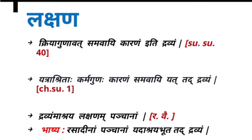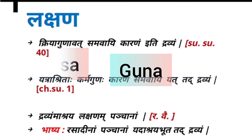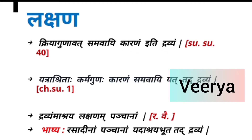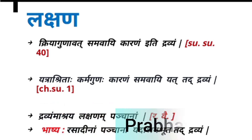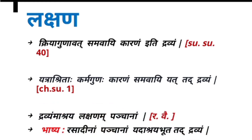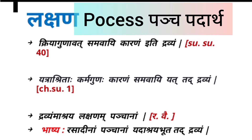The Bhasha commentary explains that the five Ashrayas residing in Dravya are Rasadi Panchakas — that is, Rasa, Guna, Virya, Vipaka, and Prabhava. These five entities present in the Dravya constitute the Lakshana of Dravya. Dravya also has Pancha Padartas.